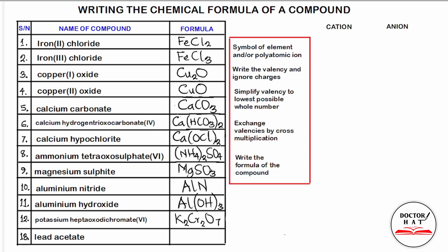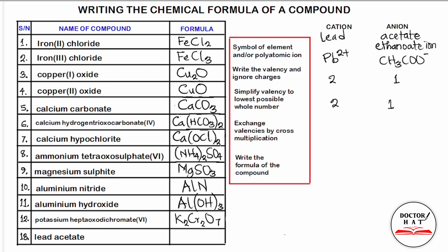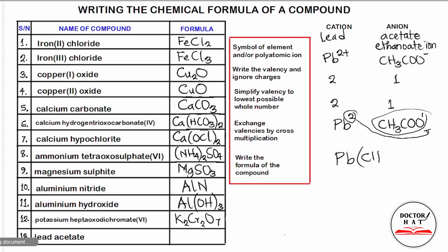Number thirteen: lead acetate, where acetate is also known as ethanoate. The formula for lead ion is Pb²⁺ and acetate ion is CH₃COO⁻, derived from ethanoic (acetic) acid. The valency of lead is 2 and acetate is 1. We cannot simplify 2:1. Cross-multiplying gives Pb(CH₃COO)₂, where the 2 belongs to the whole acetate ion — the chemical formula for lead acetate (lead ethanoate).